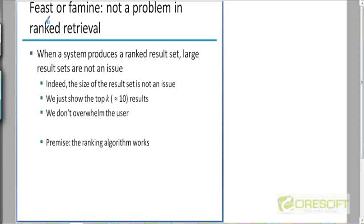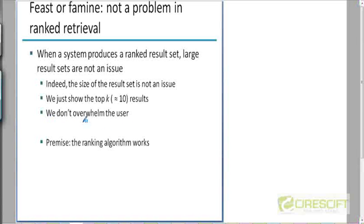We don't get this feast or famine problem in Ranked Retrieval because even if the result set is very large, it's not a problem because your documents are ranked in decreasing order of proximity to the query. We can always just show the top 10 results like Google does. We don't have to bombard the user with thousands of results in a scrambled order as in Boolean Retrieval — we can rank the list of documents so the user doesn't get overwhelmed. This, of course, assumes that we have a good ranking algorithm.